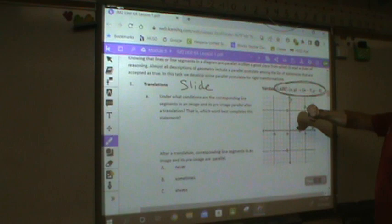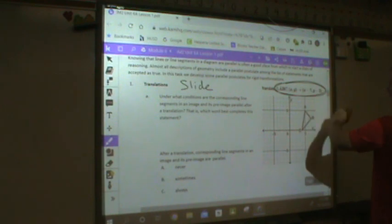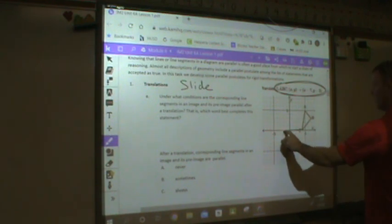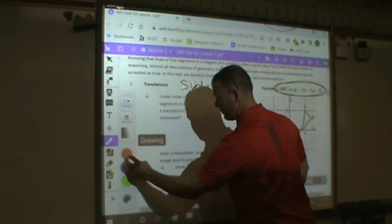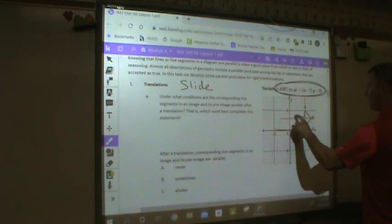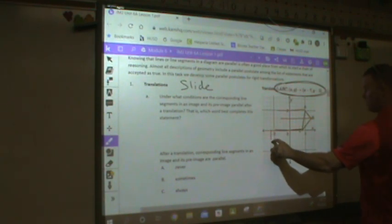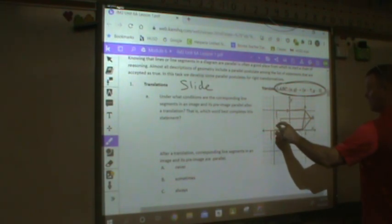It says translate triangle ABC or slide it so that every XY value moves X minus 7. So C is going to move minus 7. We'll do this in a different color. It's going to be easier to see. C is going to move minus 7. B is going to move minus 7. A is going to move minus 7. My Y value is going to move minus 2, so every Y value moves minus 2.